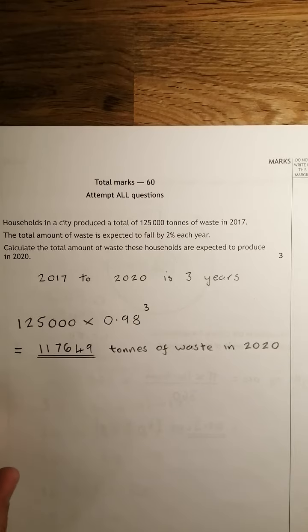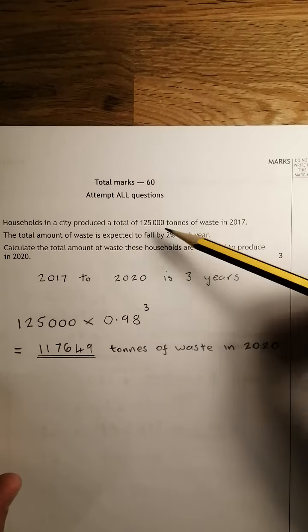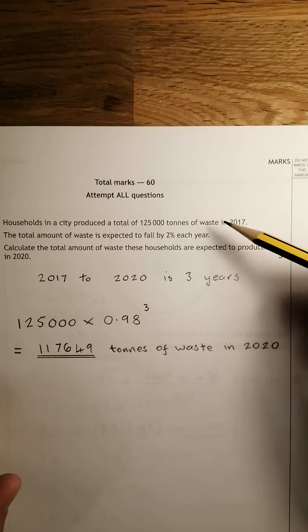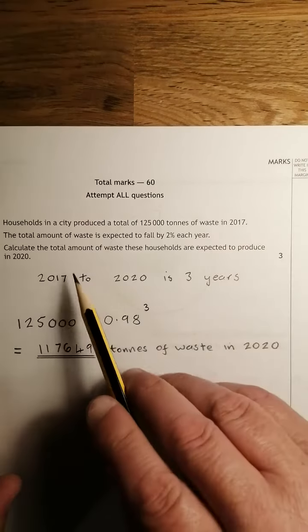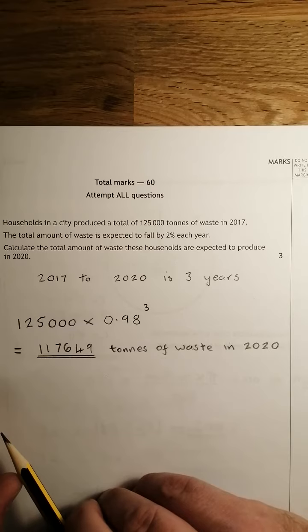Question 1 says households in the city produce a total of 125,000 tonnes of waste in 2017. The total amount of waste is expected to fall by 2% each year, and calculate the amount they would expect to produce in 2020.